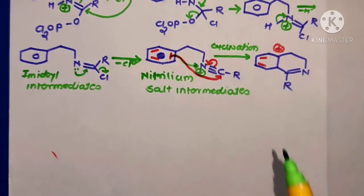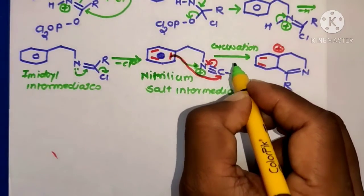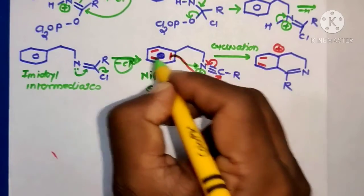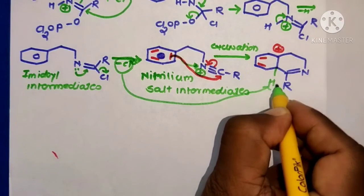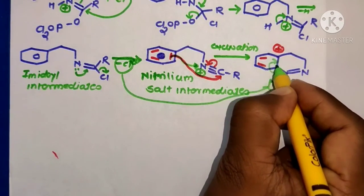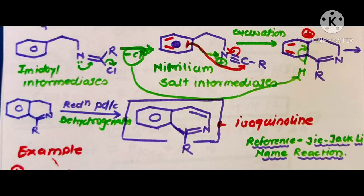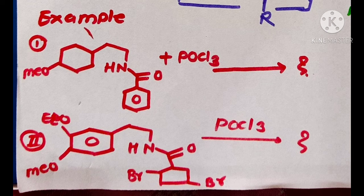The Cl⁻ ions abstract H⁺ ions, and the bonding electrons shift. In the last step, there is dehydrogenation in the presence of a palladium (Pd) catalyst, converting 3,4-dihydroisoquinoline to the final product, isoquinoline. Two practice examples are given — write the correct mechanism and product for each reaction and submit your answer.